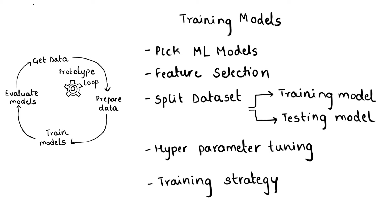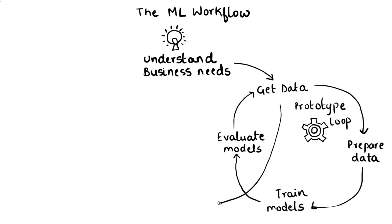The next step in the prototyping loop is model evaluation. There are many open source tools that help data scientists calculate and visualize metrics for evaluating machine learning models. If a product manager has done their job, there will be an existing set of success and failure metrics to evaluate against. The creation of a model that meets your success criteria is an iterative approach, and this learning loop will typically be run through multiple times until a sufficient model has been developed.